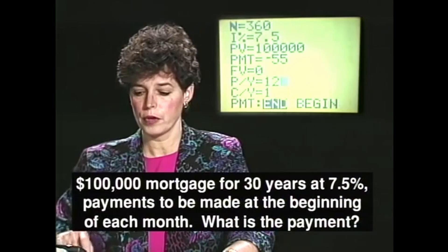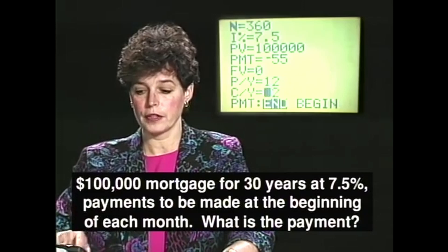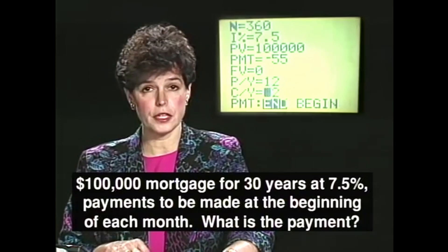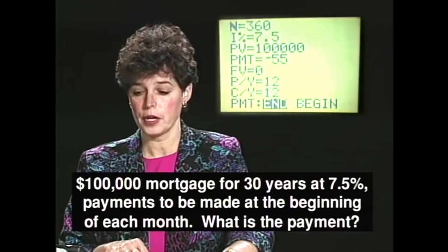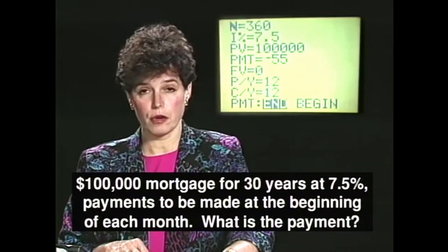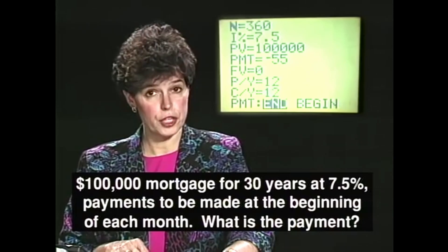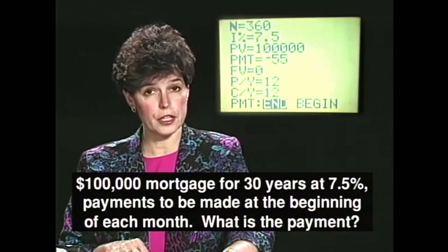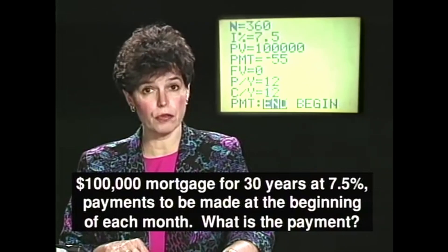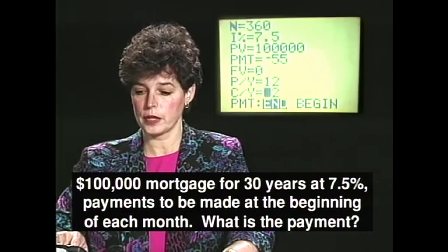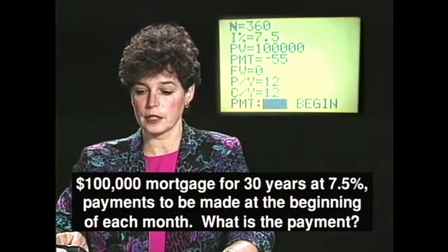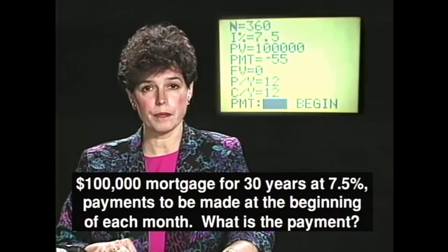Move on down to C divided by Y, which is the number of compoundings per year. It is now 12. I could have changed it if I'd like to, but 12 is the appropriate number for our problem. So we'll leave that and go down to the last line.